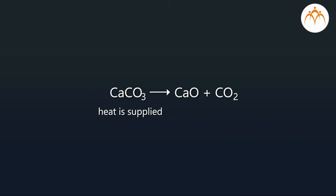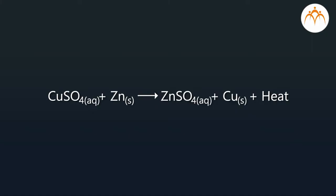If heat is provided to carry out a reaction, it is shown by delta, a triangle written above the arrow. If heat is released during the reaction, it is indicated as follows: CuSO4(aq) plus Zn gives ZnSO4(aq) plus Cu plus heat.